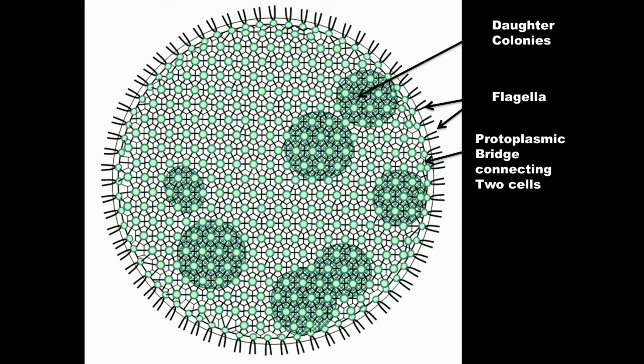Here is a diagram, and in the diagram we can see the inside of the hollow ball filled with cytoplasm and daughter colonies.